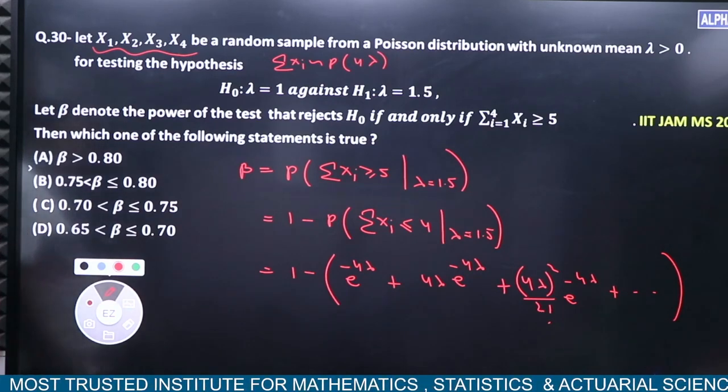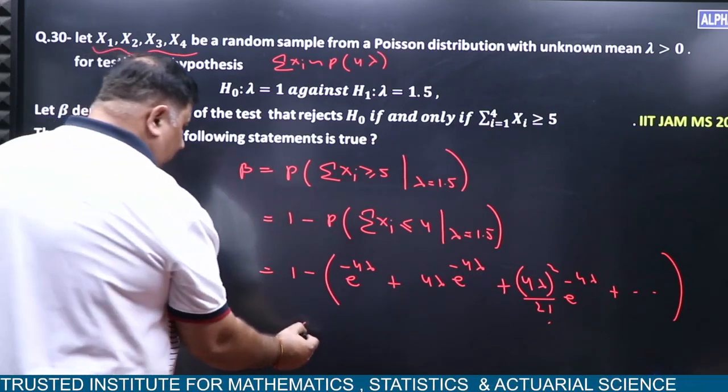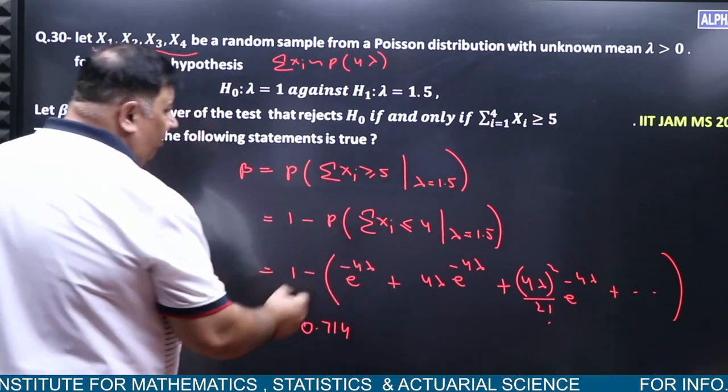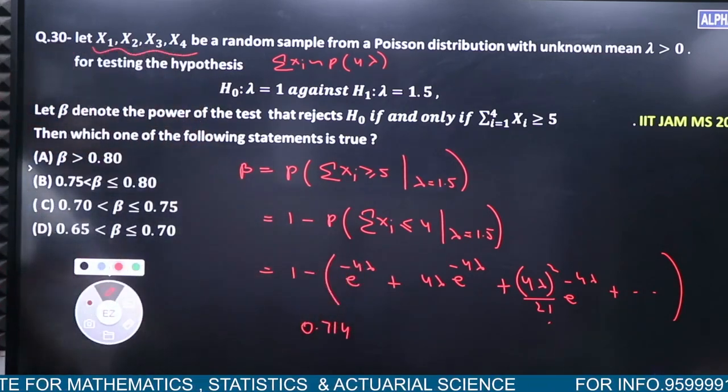0.714 is the answer. Lambda is 1.5 times 4 equals 6.